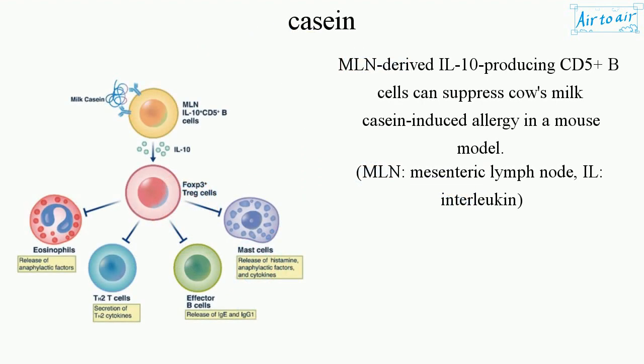MLN-derived IL-10-producing CD5-plus B cells can suppress cow's milk casein-induced allergy in a mouse model. MLN refers to mesenteric lymph node, and IL refers to interleukin.